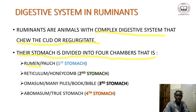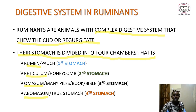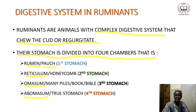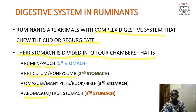The four chambers of the ruminant stomach are as follows. The first stomach is known as the rumen — sometimes nicknamed the paunch because it looks like a pouch. The second stomach is called the reticulum, nicknamed the honeycomb because the way it looks resembles a honeycomb.